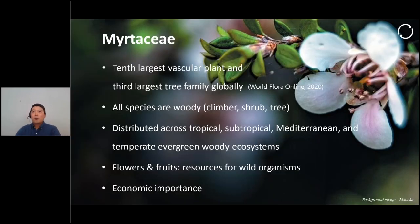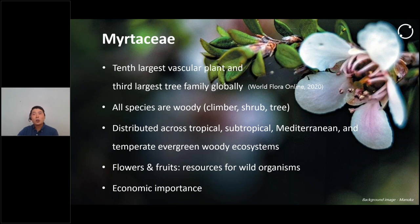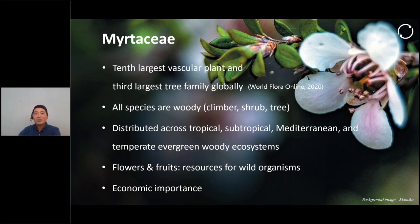Let me start with a general overview of the Myrtaceae in a global context. The Myrtaceae is a common, extremely diverse, and often dominant woody plant family distributed across diverse ecosystems, including tropical, subtropical, Mediterranean, and temperate evergreen woody ecosystems. The family is one of the world's most species-rich flowering plant families — ranked as the 10th largest vascular plant family and the third largest tree family in the world. All species are woody with various growth forms, from small shrubs to emergent trees, including one of the world's largest trees, the centurion in Australia. The family produces plenty of flowers and fruits, which provide resources for diverse organisms, including fungi, insects, birds, and mammals.